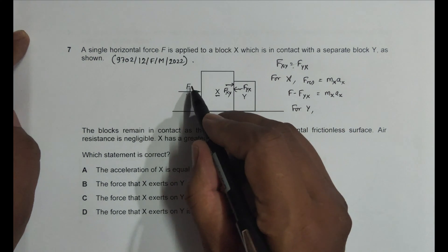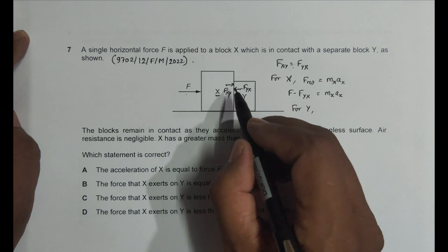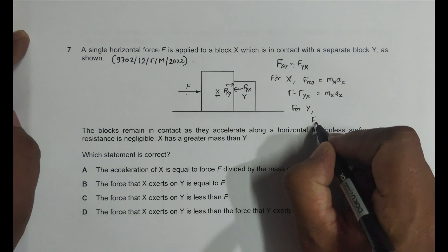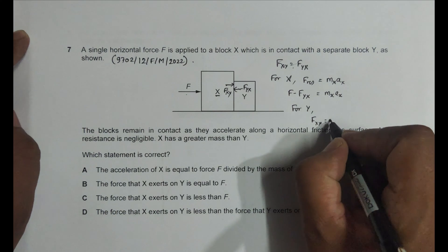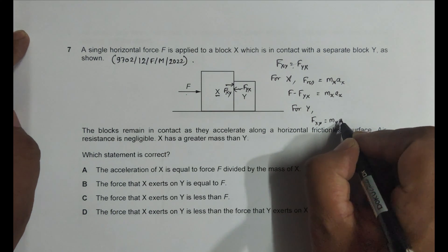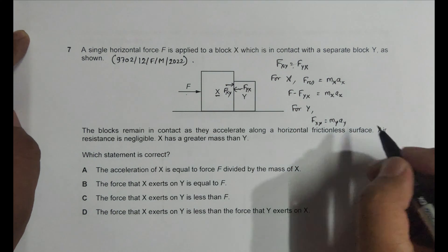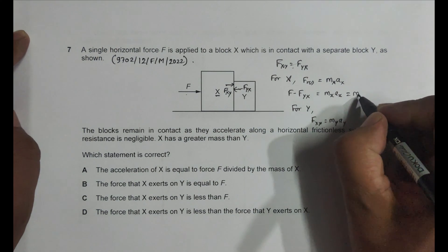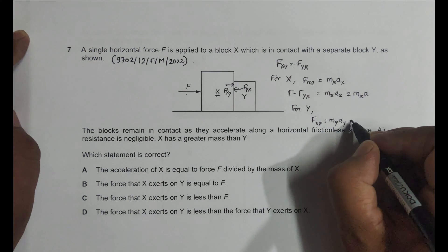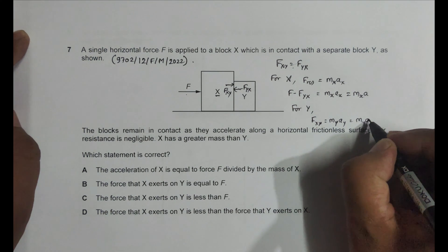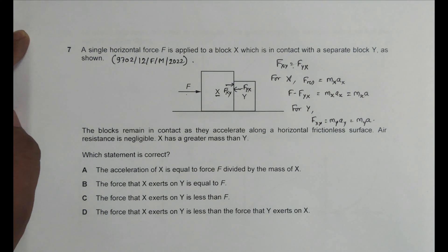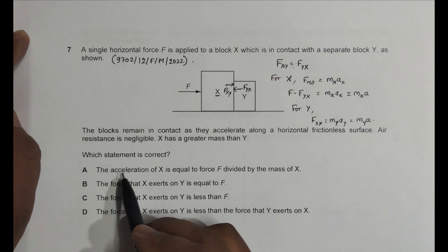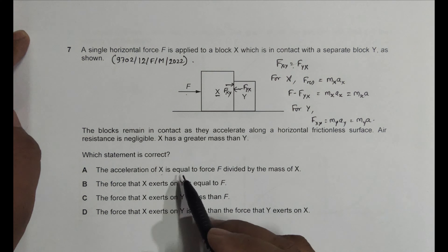For body Y, the only force acting on it is F_XY — force F does not reach Y directly. So applying Newton's 2nd law to Y: F_XY = M_Y × a_Y. Since both blocks are in contact, they share the same acceleration a, giving us M_X × a for X and M_Y × a for Y.